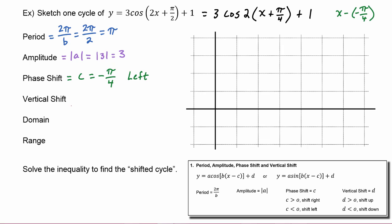The vertical shift is equal to d. In this case, d is positive one, so the graph will be moving upward by one.